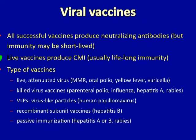Live virus vaccines are usually most effective because they induce cytotoxic lymphocyte immunity, which can be lifelong for some vaccines. Neutralizing antibodies are also produced but are less important in protecting the host with live vaccines. Types of live attenuated virus vaccines include measles, mumps, rubella, oral polio, yellow fever, and varicella. Killed virus vaccines will not typically produce cell-mediated immunity, but will produce neutralizing antibodies.